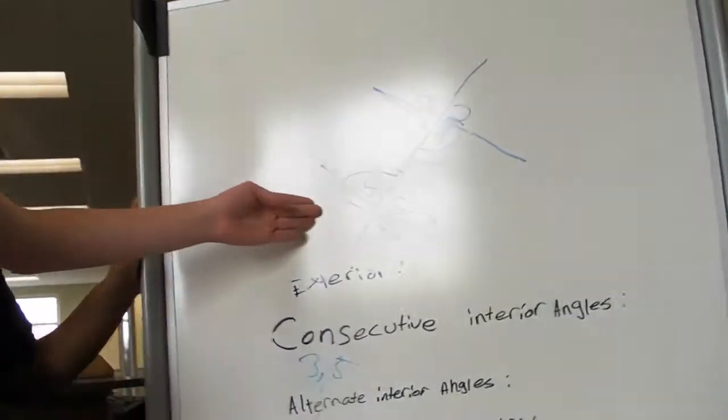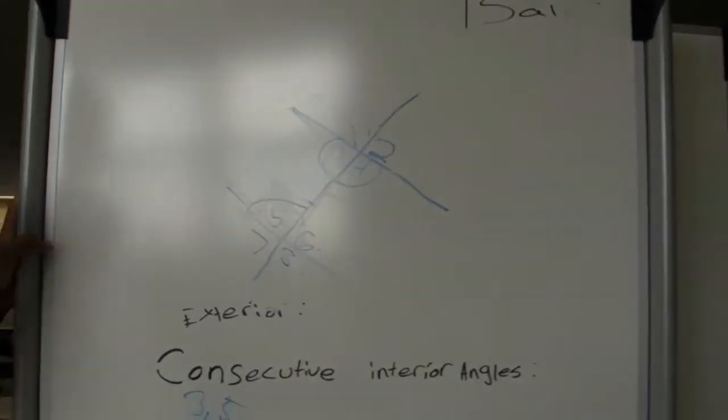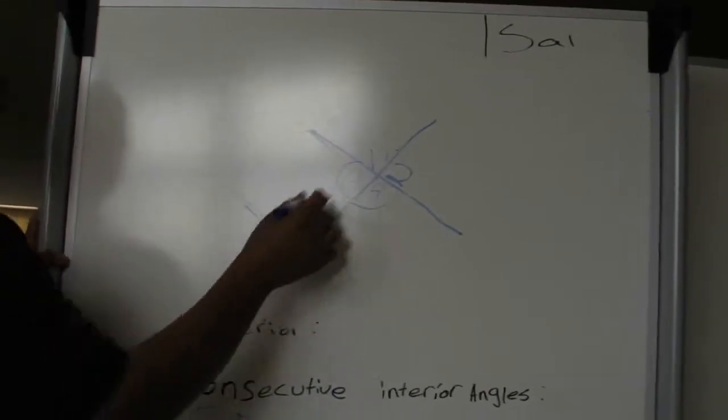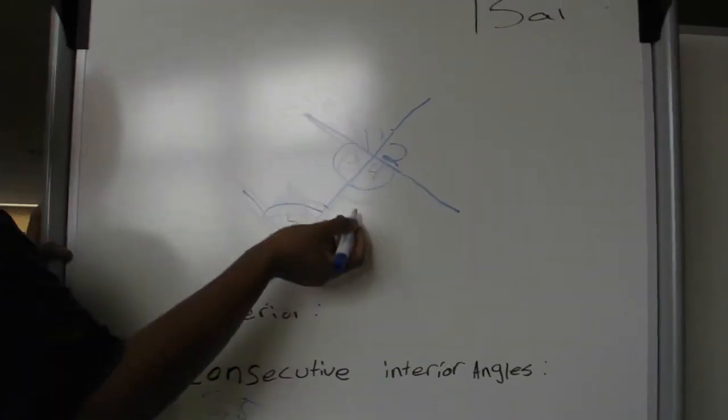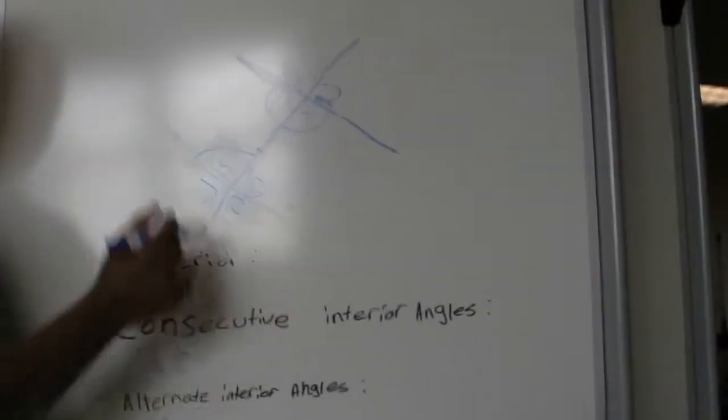Oh, so alternate exterior would be angles such as seven and two. Exactly. One that's on the outside, but there are almost ones on this side and ones on that side.